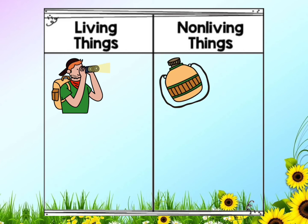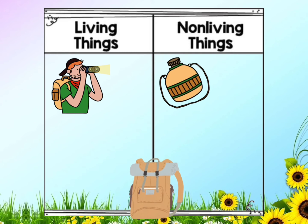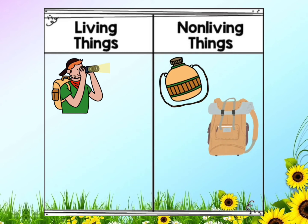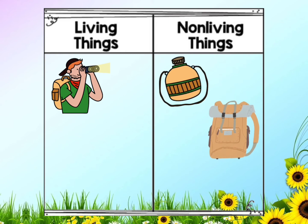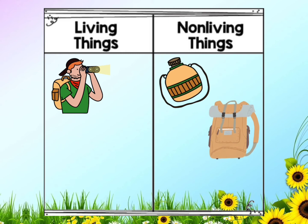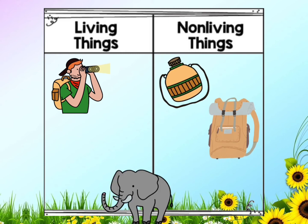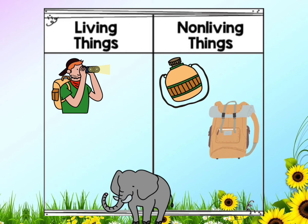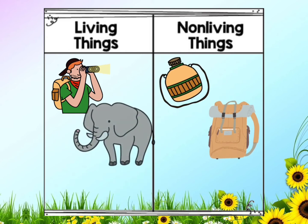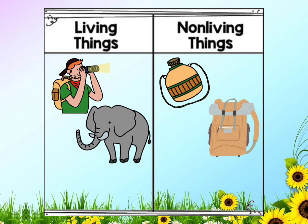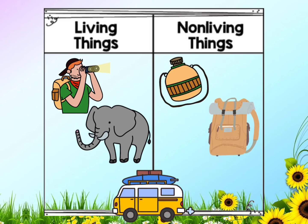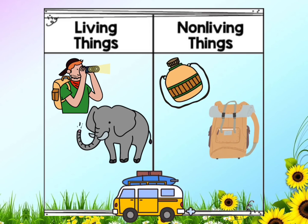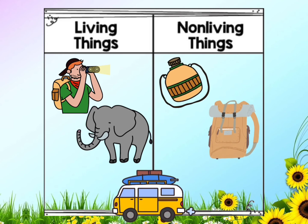What is the third object? A backpack. It doesn't do the seven life processes, so it is a non-living thing. What about the elephant? Here is the elephant. The elephant does the seven life processes, so it is a living thing. Very good.